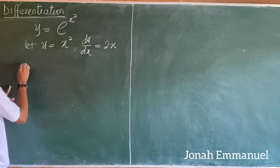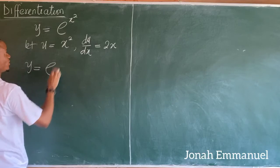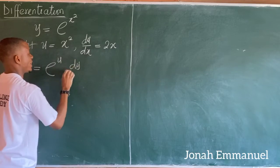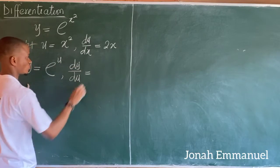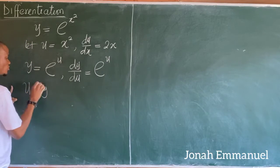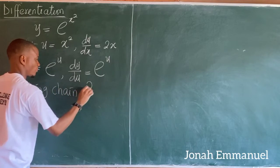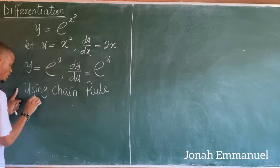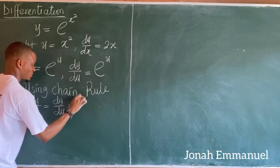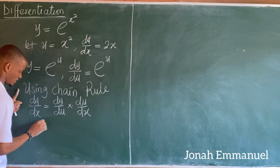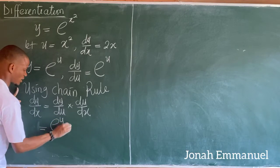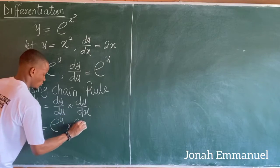Next up, I'll have that y is equal to exponential x squared, which we said is u, so it becomes exponential u, such that dy over du is now equal to exponential u. So, using chain rule, I have that dy over dx is equal to dy over du times du over dx. That's now equal to exponential u times 2x.